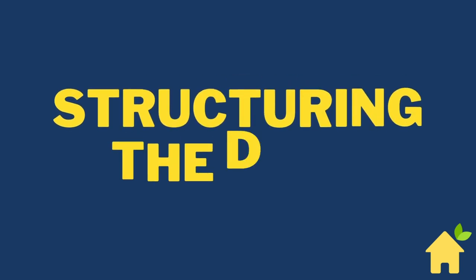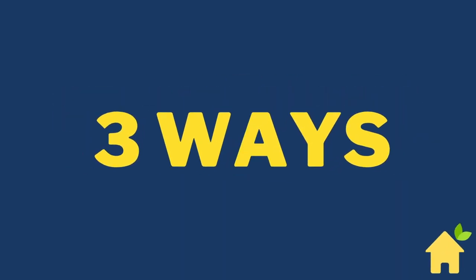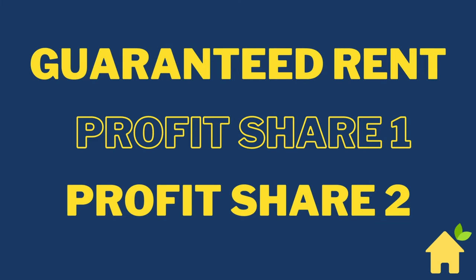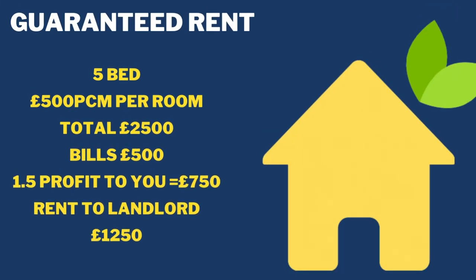Now, structuring the deal. There are three main ways of structuring a rent to rent deal. The first one is guaranteed rent — I don't like this term because nothing's guaranteed, but it is called guaranteed rent. Then we've got profit share model one and profit share model two. For all of these examples, we are going to use a five-bed HMO with the rooms at £500 per calendar month per room, which totals £2,500. We are also going to use the assumption that the bills are £500 — that has probably gone up for a five-bed now, but we're going to use it for this exercise.